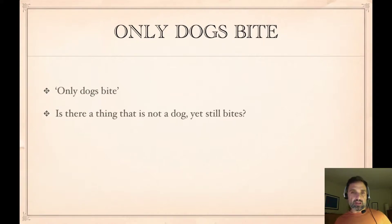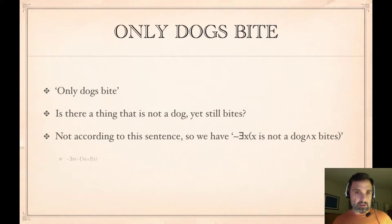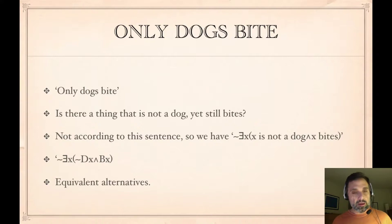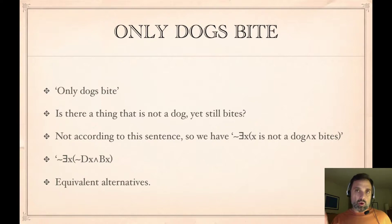There's an alternate symbolization. If only dogs bite, we ask: is there a thing that is not a dog yet still bites? The answer is no. There's nothing such that it is not a dog and it bites. So we can write: not some x, not-Dx and Bx. I find this more complicated because of the two negations, but it's equivalent to 'for all x, if Bx, then Dx.' If you find it more intuitive, no problem.